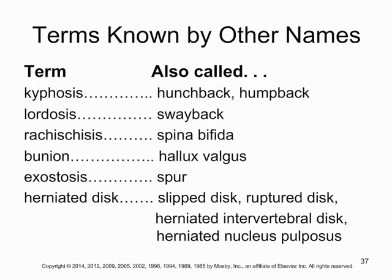This is a reference table tying medical terms learned in this chapter to common everyday words — for example, kyphosis is known as hunchback or humpback, exostosis is known as a spur, and herniated disc goes by several names.